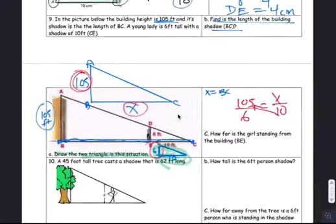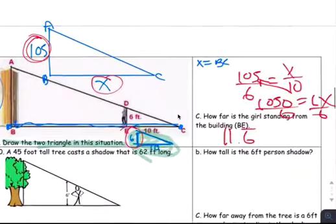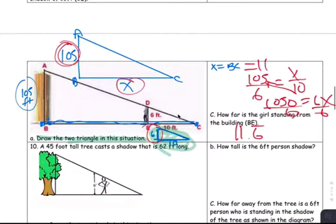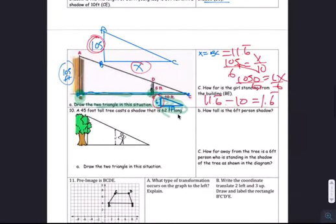Multiply diagonally. You get 1050 equals 6X. Divide by 6. You get 175. BC is 175. You want to find the length. This is not this answer. Sorry. You want to find the length of this EB right there. This one. Therefore you take the whole thing, 175 minus this 10, equals 165.